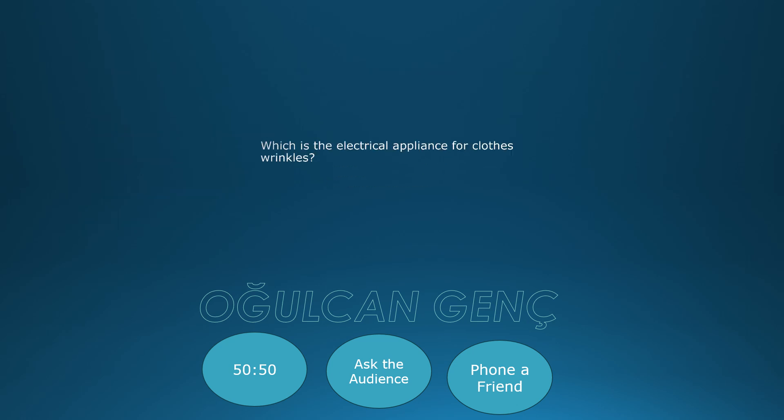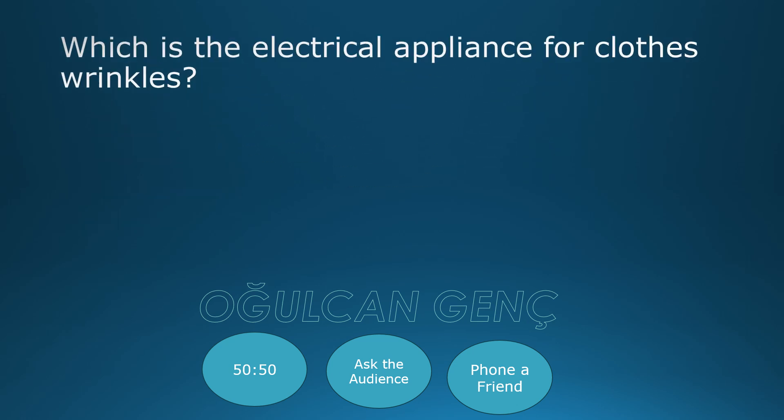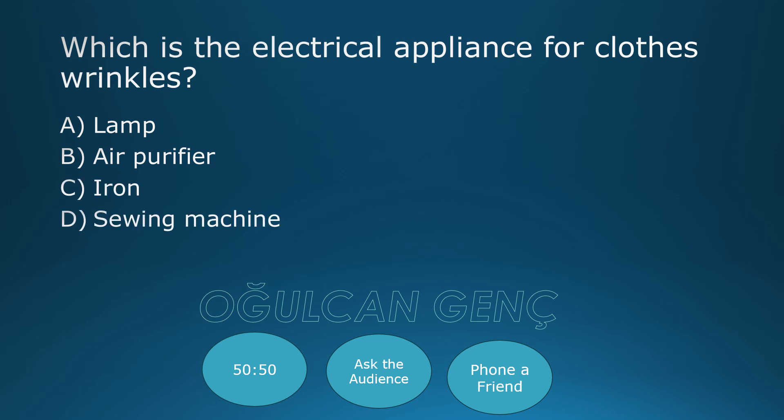Which is the electrical appliance for closing wrinkles? Options: Lamp, Air purifier, Iron, Sewing machine. Final answer: Iron. Correct answer is Iron.